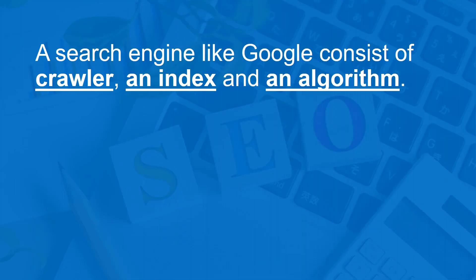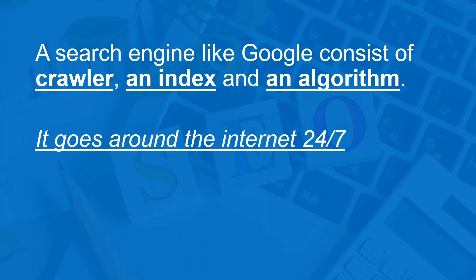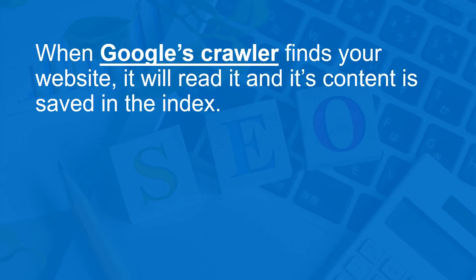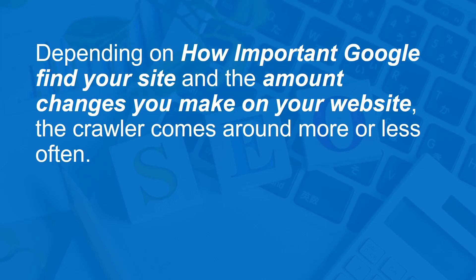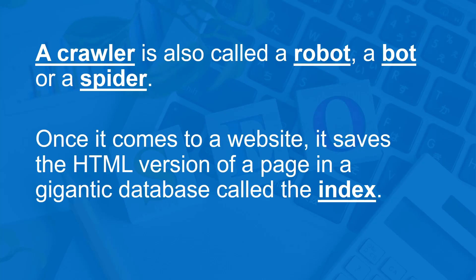What are bots? A search engine like Google consists of a crawler, an index, and an algorithm. It goes around the internet 24/7. When Google's crawler finds your website, it will read it and its content is saved in the index. The index is Google's huge database in which the content of all websites is saved. A crawler is also called a robot, a bot, or a spider.